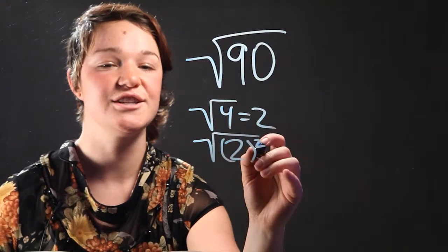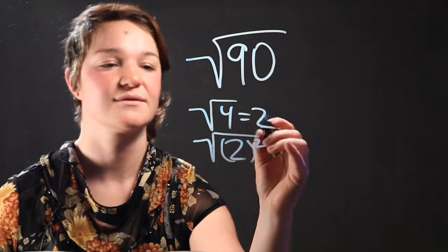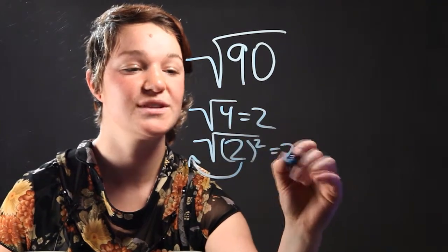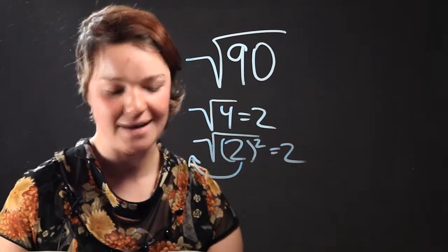So a radical is undoing the square. So you're taking this outside, which is equal to 2. Okay, let's come back to 90.